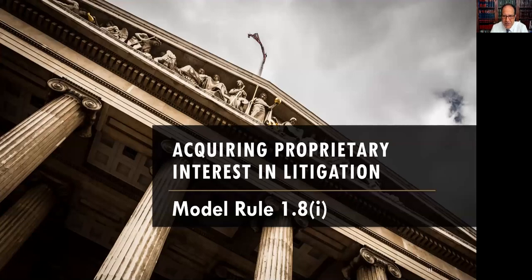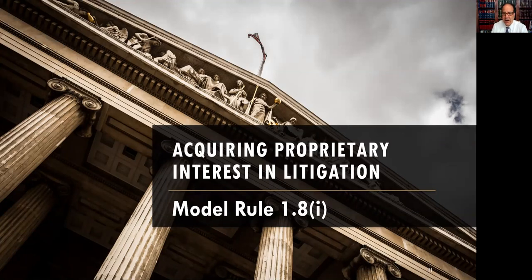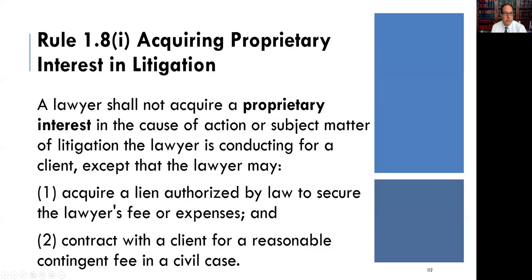This is a lecture for my professional responsibility class. We're going to be talking about Rule 1.8(i). I know this doesn't sound very interesting, but this is a rule about acquiring a proprietary interest in litigation for your client. As a quick reminder, we have a number of conflicts of interest rules — the biggest one is 1.7. Rule 1.8 is really a collection of specific rules about the lawyer's self-interest that can create a conflict of interest in representing a client.